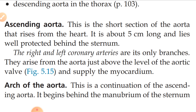The ascending aorta is a short section of the aorta that rises from the heart. It is about 5 cm long and lies well protected behind the sternum in the anterior mediastinum. The right and left coronary arteries are its only branches, as the heart muscle also needs a continuous blood supply.